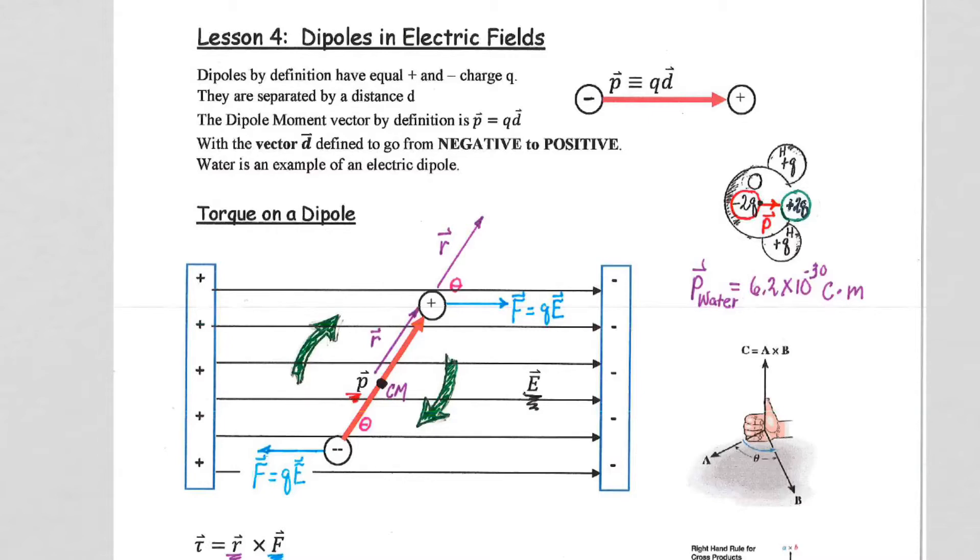Dipoles will be important when we study magnetism later in the year because magnetism always involves dipole effects. The mathematical structure has similarities, so this is very important. Dipoles by definition have equal positive and negative charges q, that's important.